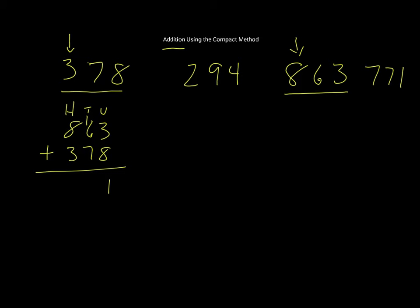So that means that I've got 70 add 60 add 10. So 70 add 60 is 130, add 10 is 140. I write the digit 4 from 140 here and I carry the digit 1 from the 100 over to the hundreds column.